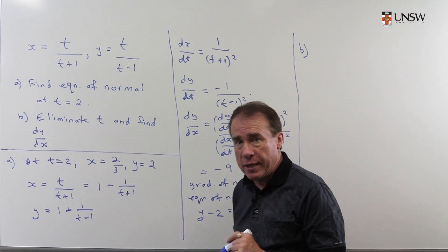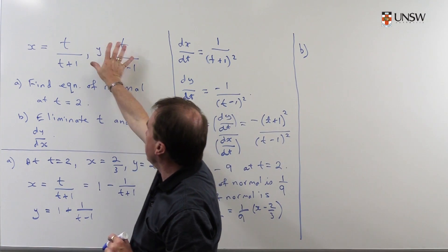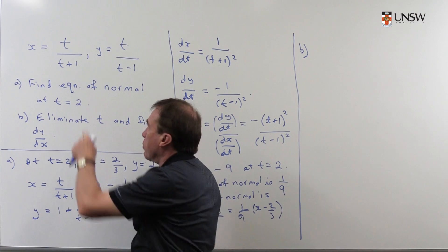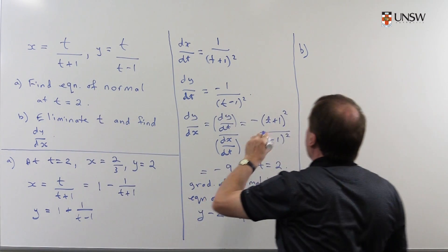If you didn't happen to see that and you were just going back to here and you wanted to eliminate t, well, you've got to do a little bit more algebra. So what I'm going to do is I'm just going to cross multiply this.